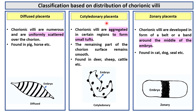Cotyledonary placenta. In cotyledonary placenta, chorionic villi are aggregated in certain regions to form small tufts, while the remaining part of the chorion surface remains smooth. This is found in deer, sheep, cattle, etc.